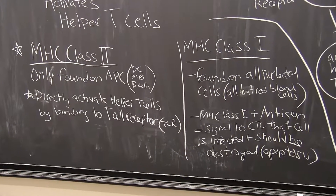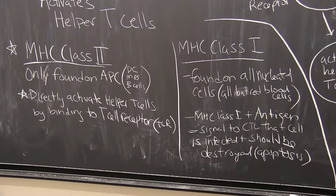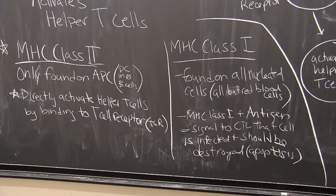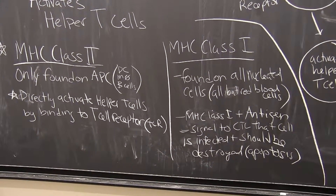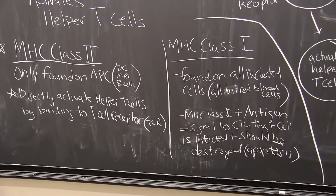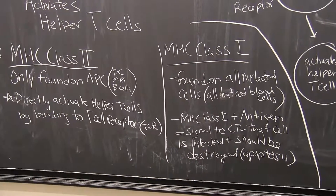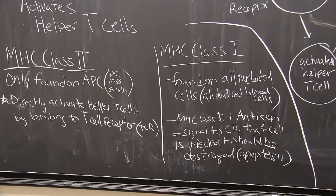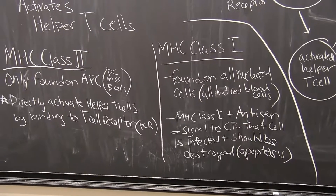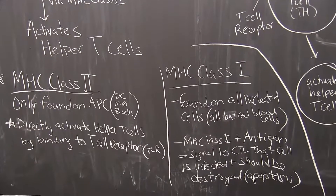On the other hand, we have MHC class 1. These are found on all nucleated cells — nucleated means cells with a nucleus, so all of our cells except red blood cells. MHC class 1 plus an antigen in its binding pocket will signal to killer T cells, or cytotoxic lymphocytes, that that cell is infected and should be destroyed via apoptosis.